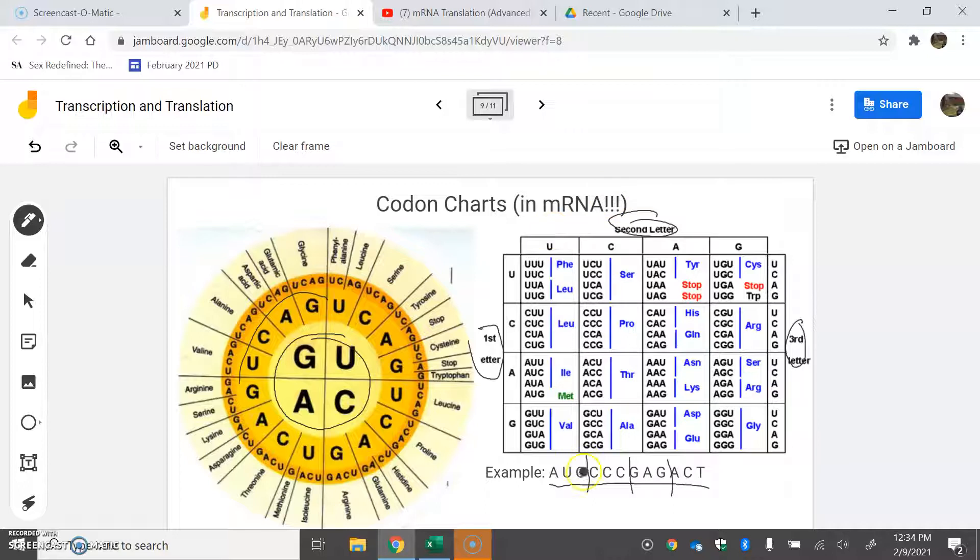So AUG - what does AUG give us? If we're going to use the box here, A is our first letter, U is our second letter, and G is our third. We go AUG, and it's going to give us a sequence for methionine. Methionine is our first amino acid, so we would write down MET.